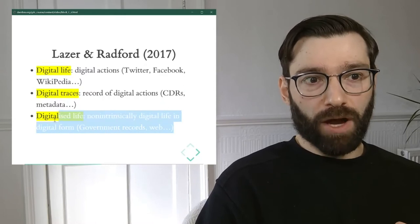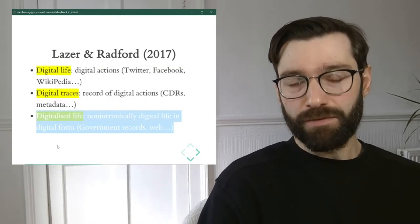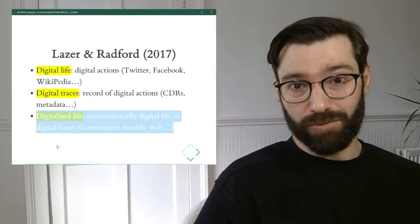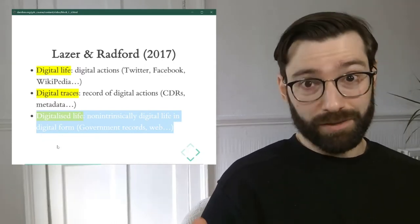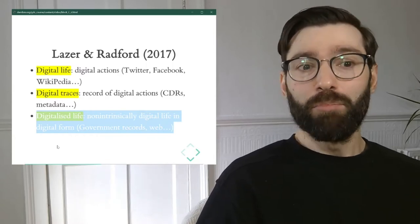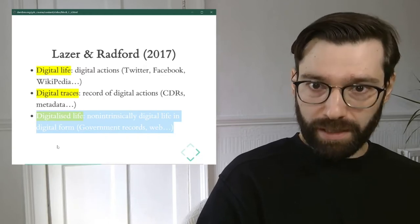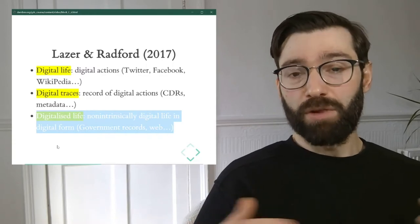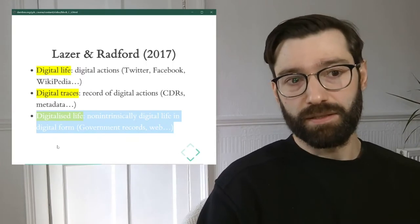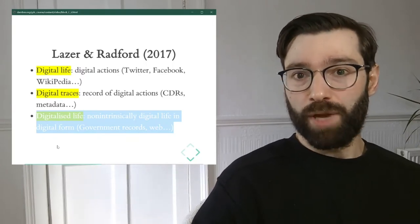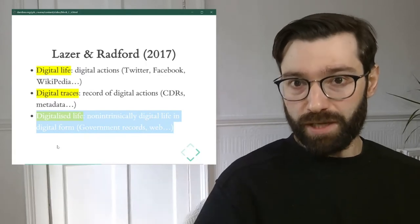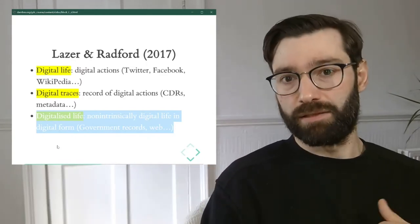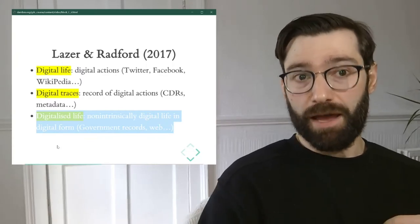The final type is what they call digitalized life — activities that happen in the physical world but are recorded digitally. Digitalized life refers to data that records digitally activities happening in physical space. For example, many government records are part of digitalized life. When you pay taxes, paying taxes is not necessarily a digital activity, but the record stating that you did pay taxes this year is a digital record — that's an example of digitalized life.